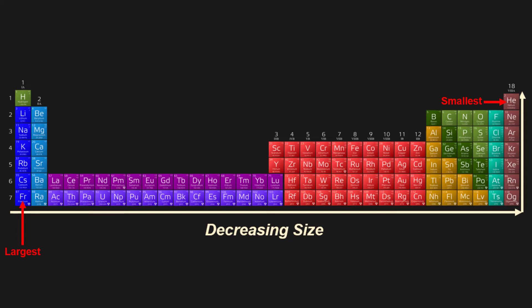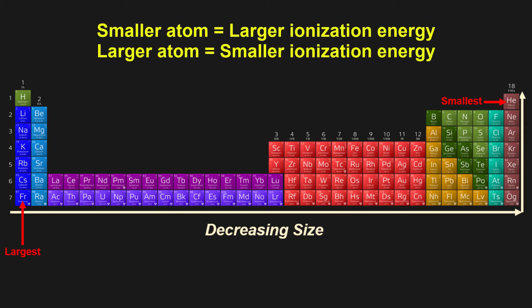The smaller the atom, the larger its ionization energy — it's harder to pluck an electron from a tiny atom because its electron cloud is so small and so close to the attractive force of its protons. In contrast, it's very easy, relatively speaking, to pluck an outermost electron from a very large atom. Francium's outermost electron in a 7s shell is so far from the nucleus that it hardly even feels it.